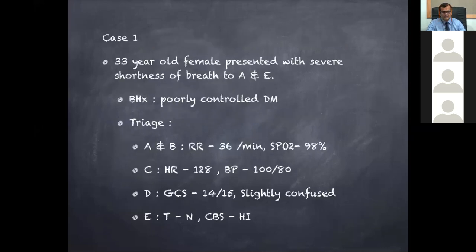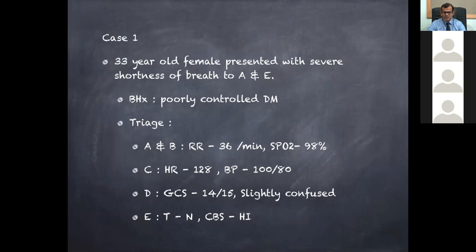Let's go to a real case. We have a 33-year-old female presenting to A&E with shortness of breath. She was significantly short of breath, asking for oxygen saying she couldn't breathe, and had been nebulized several times by previous doctors. At triage, her air entry was quite okay except she was in respiratory distress with a respiratory rate of 36, but saturating well. Heart rate was 128 with a narrow pulse pressure.